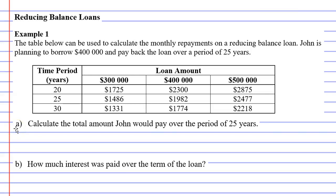In this video, we're going to complete example one. The table below can be used to calculate the monthly repayments on a reducing balance loan. John is planning to borrow $400,000 and he plans to pay back the loan over a period of 25 years. Looking at the table, these match up to a monthly repayment of $1,982, which is the amount John will need to make to repay the loan.